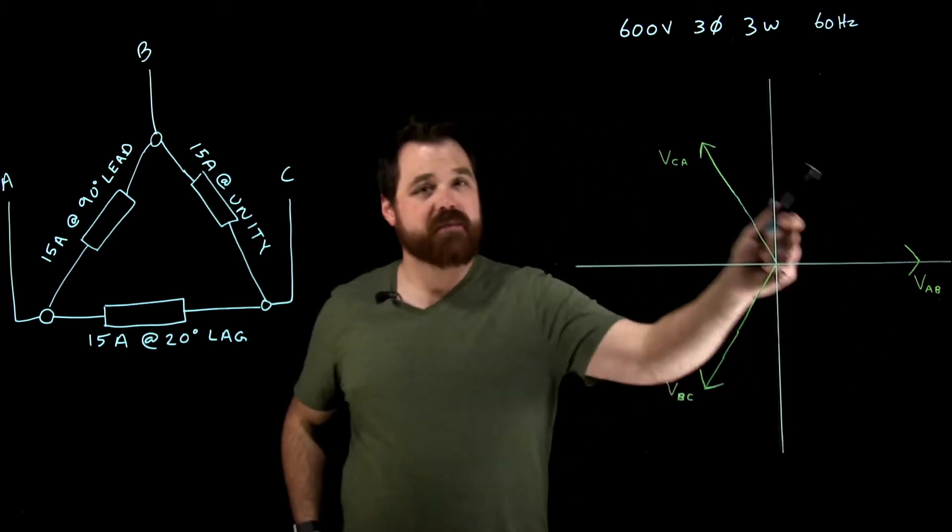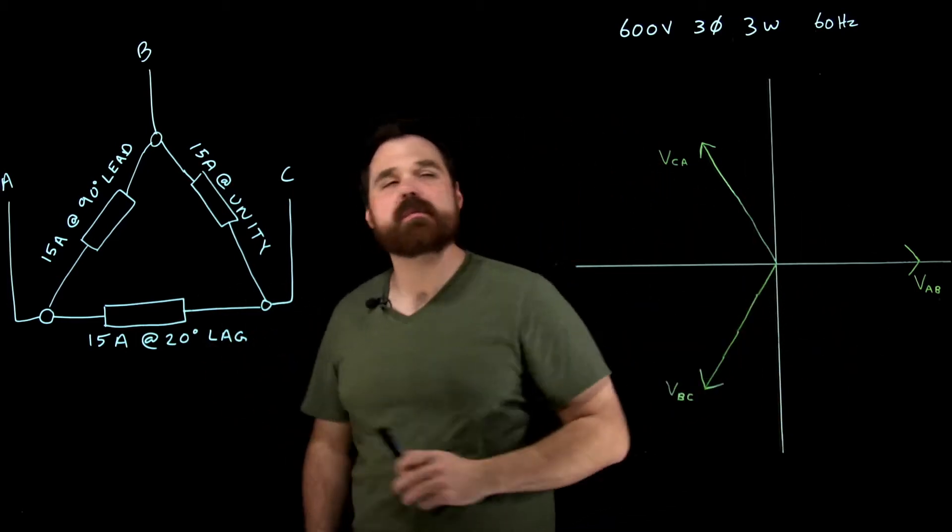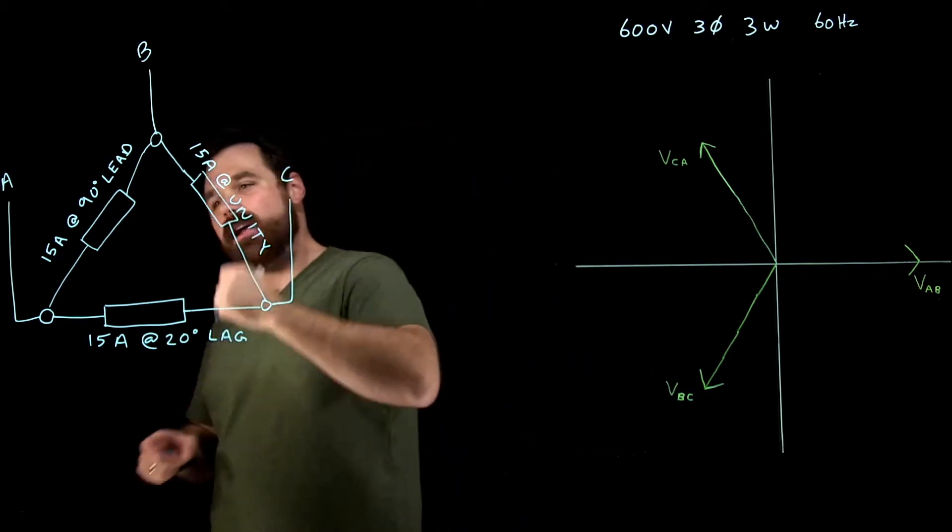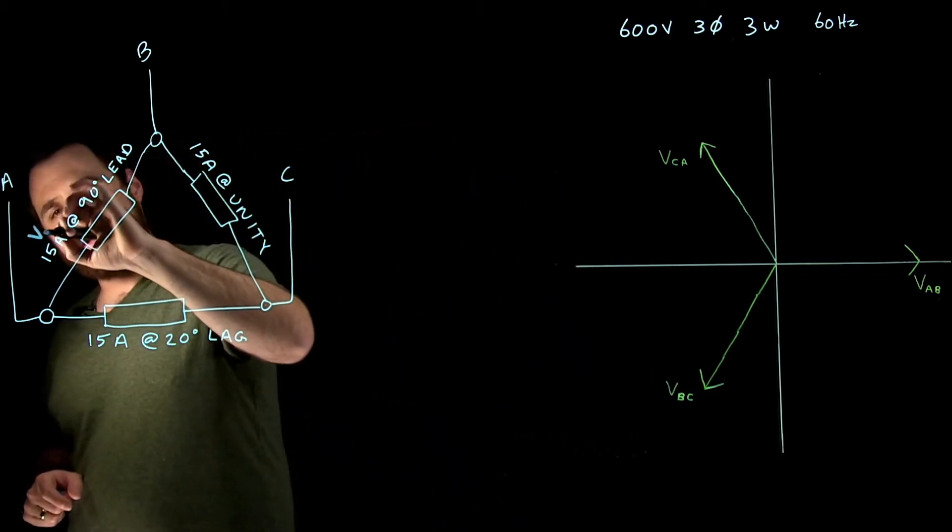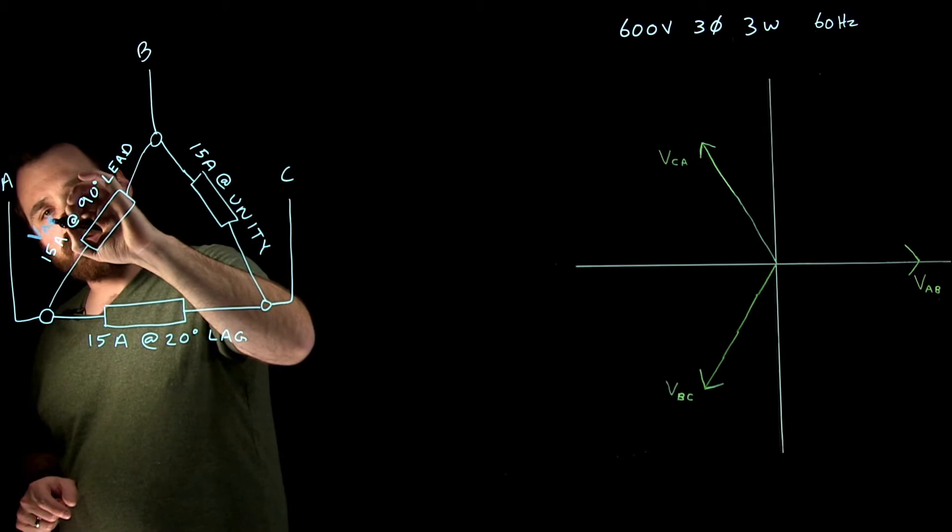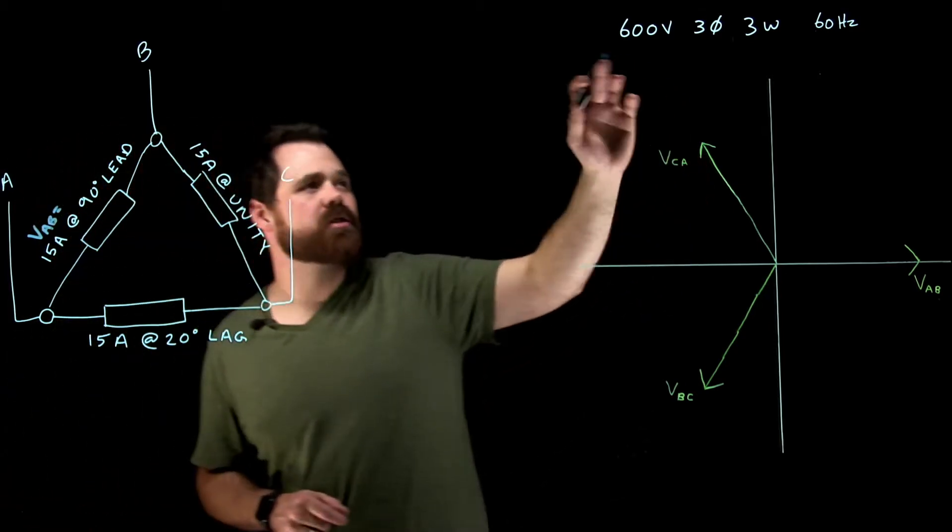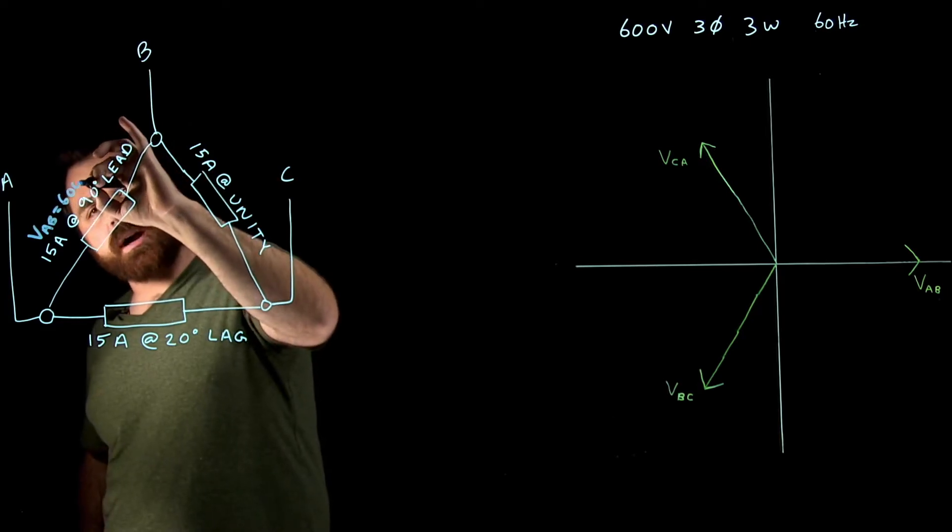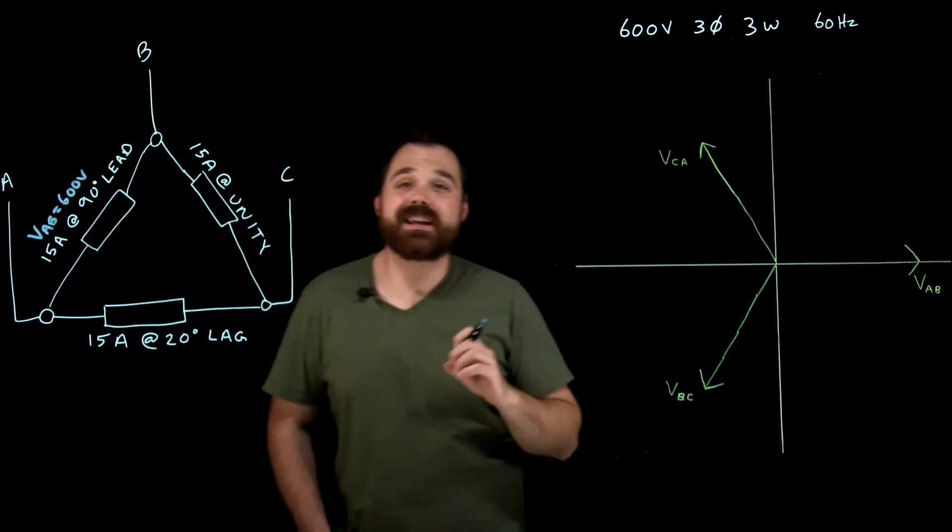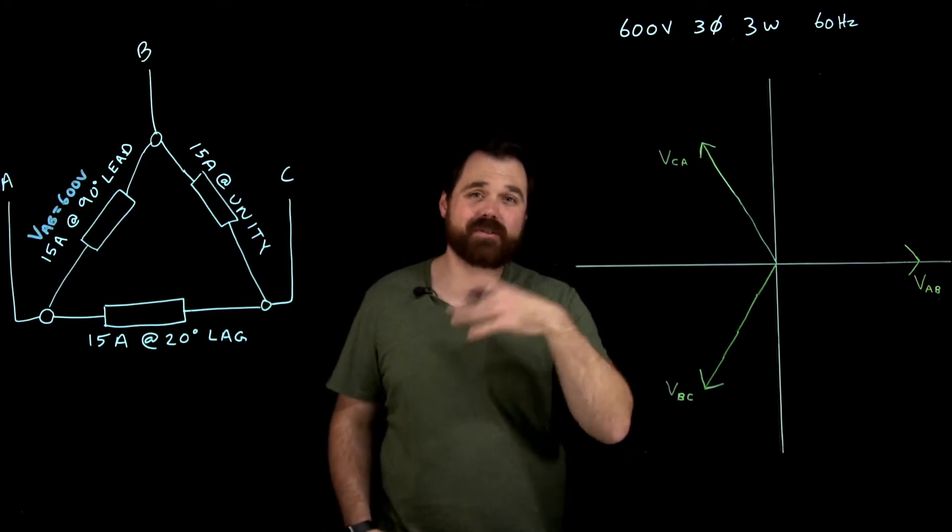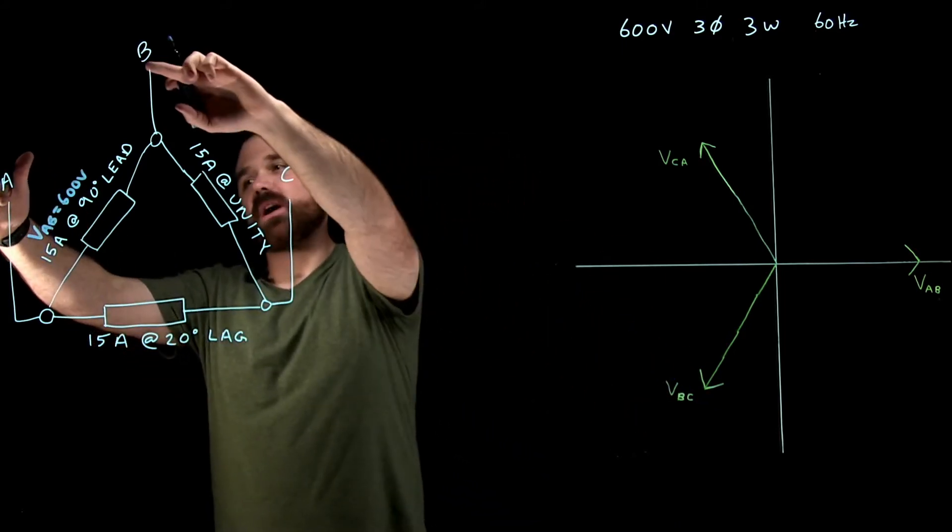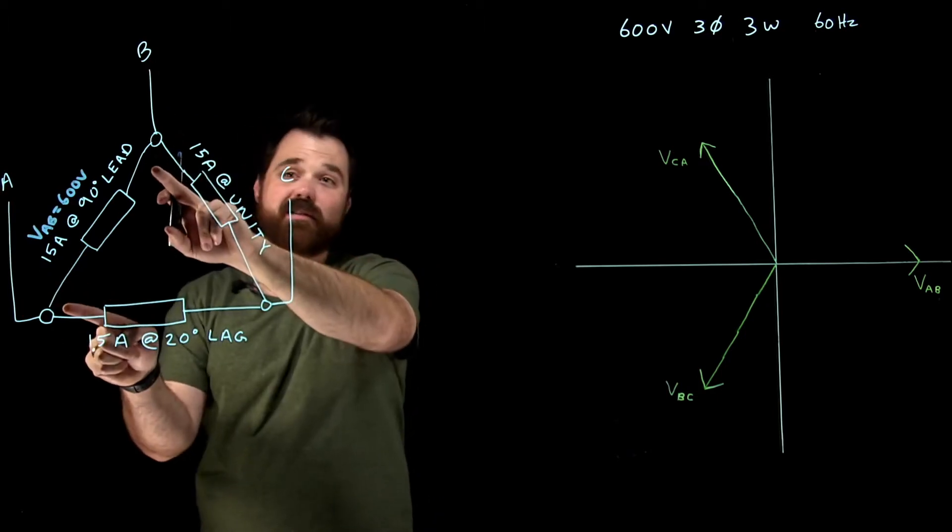So first up, I've already plotted my voltages here, but I just want to mark my voltages onto here. So what I got right from VA to B, I have VAB equals and I'm told 600 volts, three phase, three wire. That means this is 600 volts. We know in a delta circuit, my line voltage and my phase voltage, they're the same.